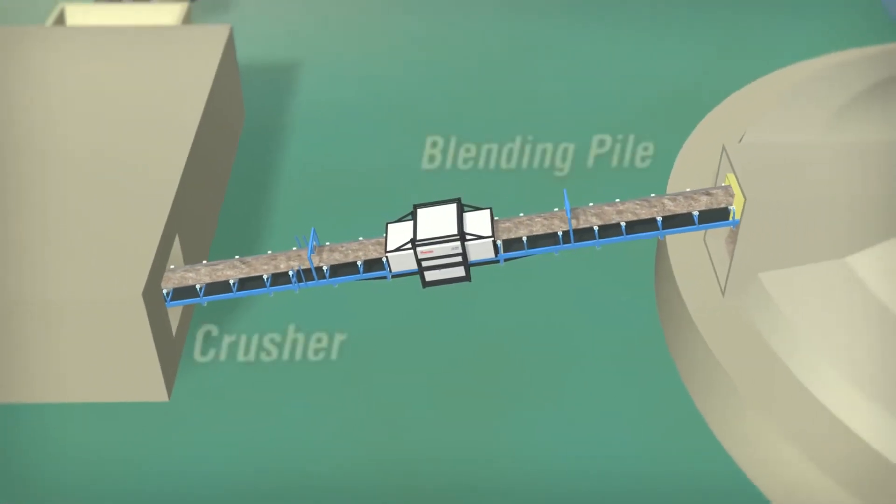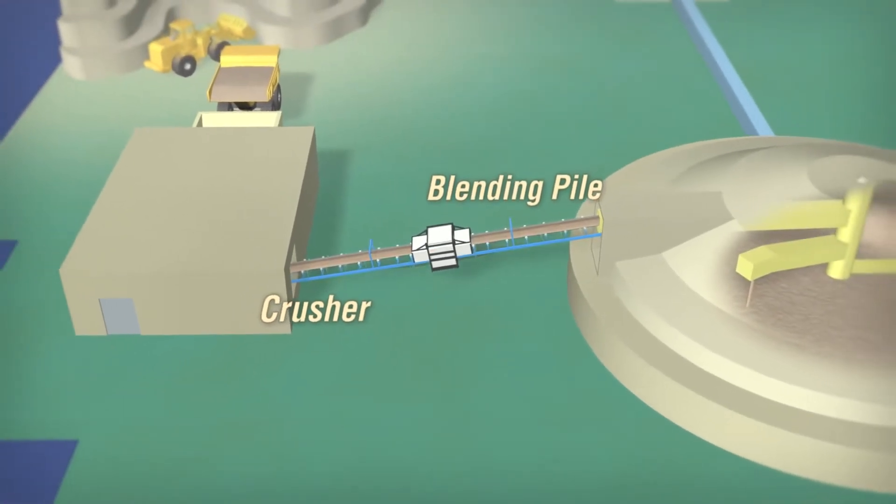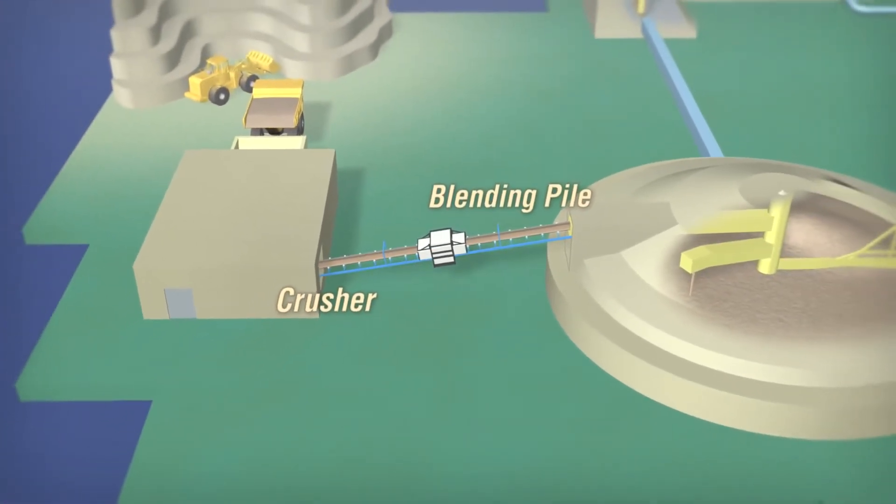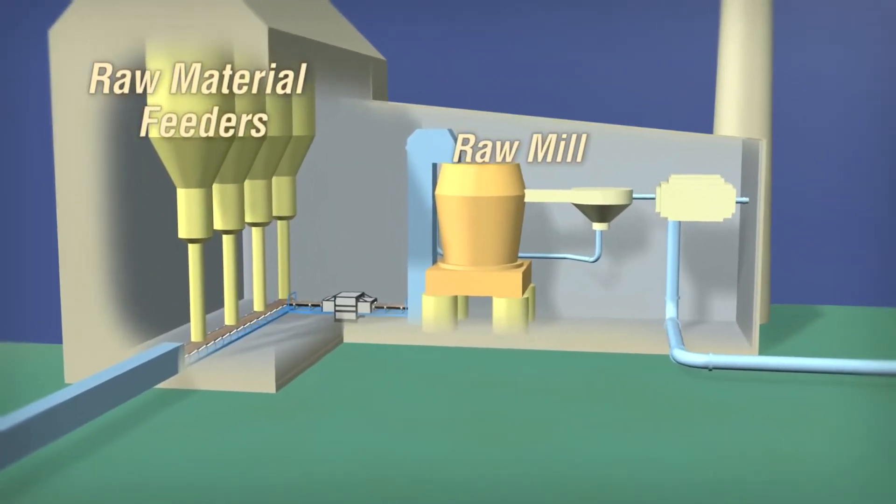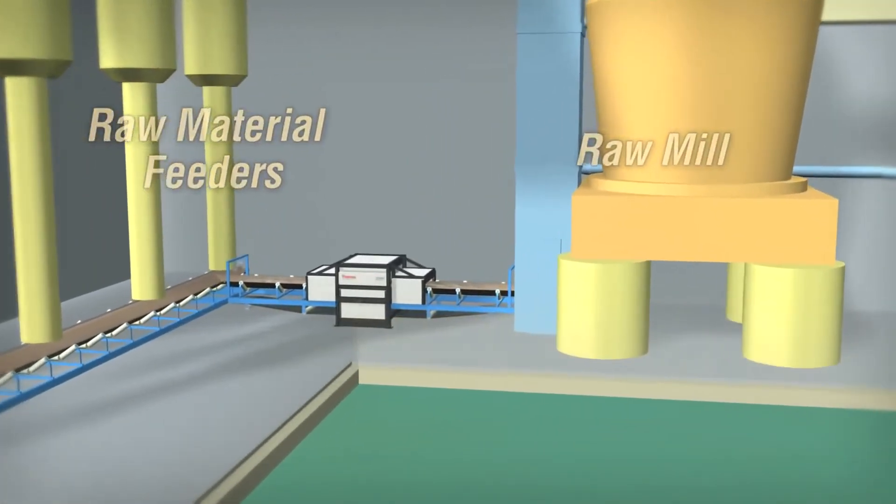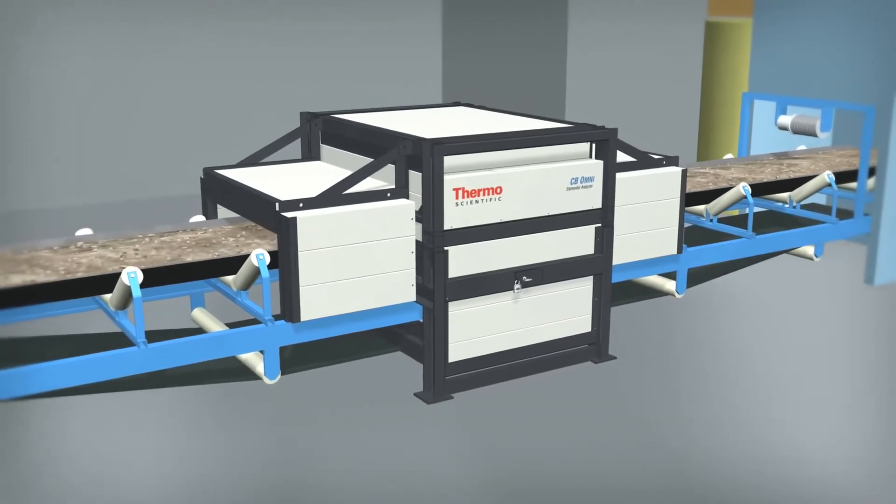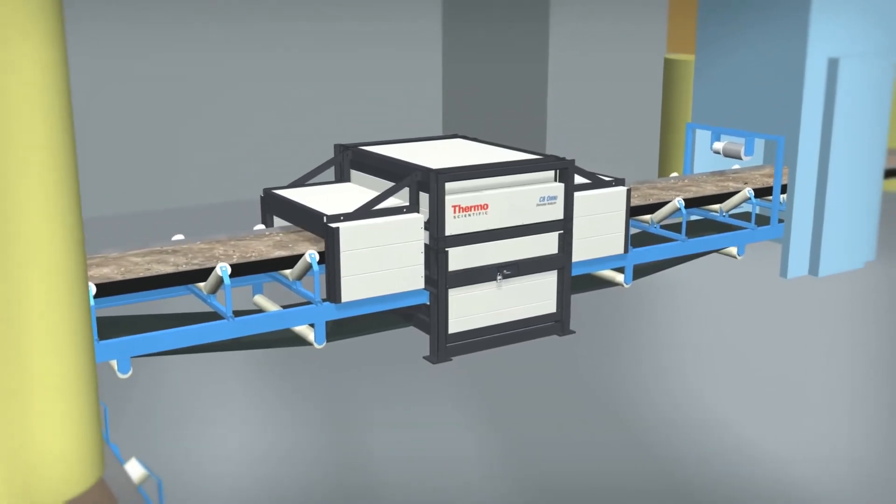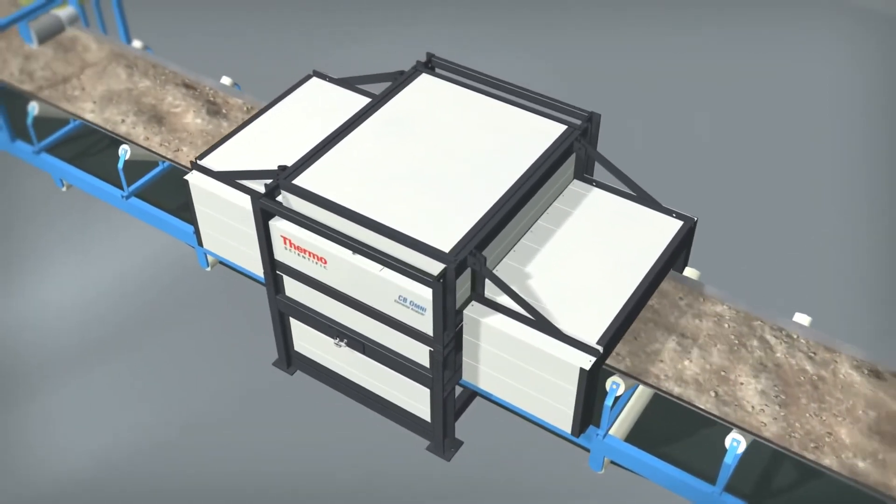In a stockpile blending application, the analyzer is located after the crusher but before the blending pile. In the raw mix proportioning area, the analyzer is located after the raw material feeders but before the raw mill. The system analyzes changes in raw material additives and responds rapidly by automatically adjusting the feed rates.